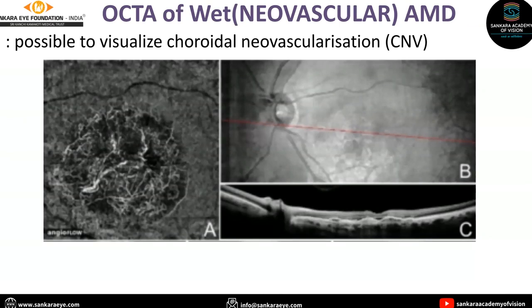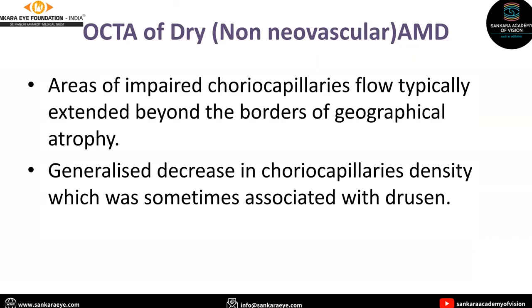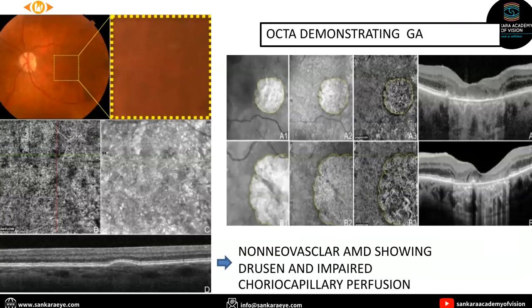In this image, you can see the CNV. It also helps in dry or non-neovascular AMD. It will appear as impaired choriocapillaris flow, which will be extending beyond the borders of geographical atrophy, and there will be a generalized decrease in choriocapillaris density, which is sometimes associated with drusen. Towards the left side, you can see non-neovascular AMD showing the drusen and impaired choriocapillary perfusion, and the right image shows generalized atrophy.